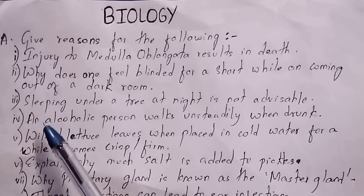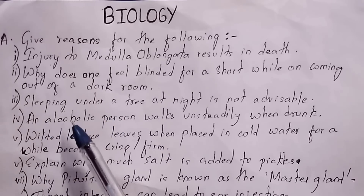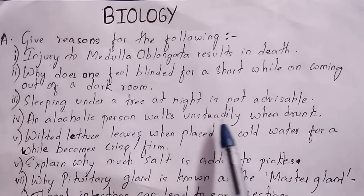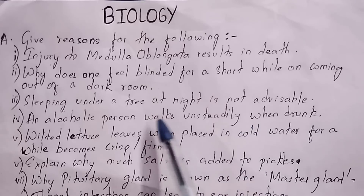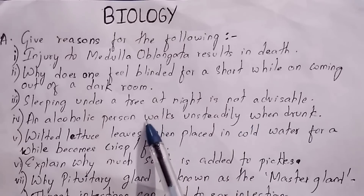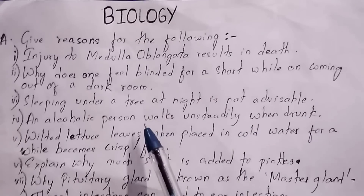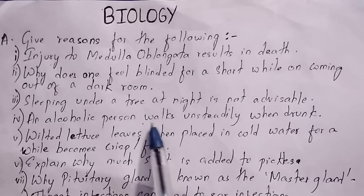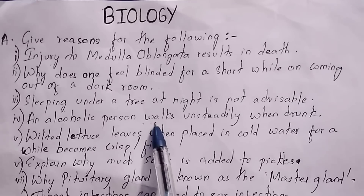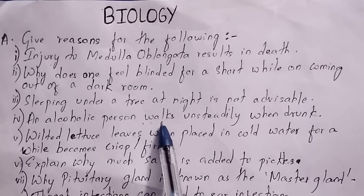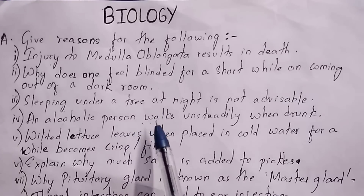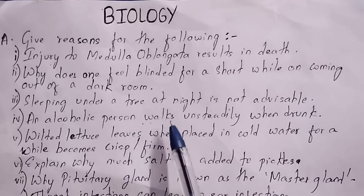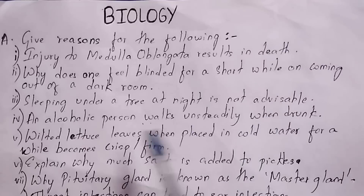Question 4: An alcoholic person walks unsteadily when drunk. This is because the cerebellum, due to the effect of alcohol, is unable to coordinate muscle movements properly. So an alcoholic person walks unsteadily when drunk.